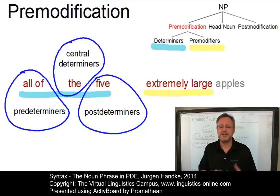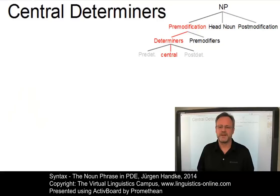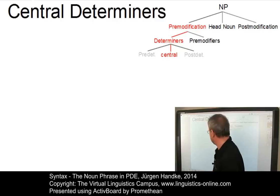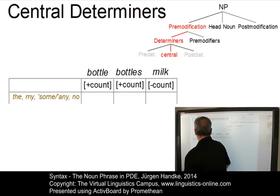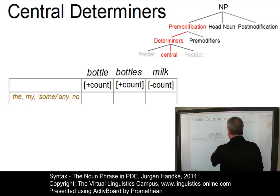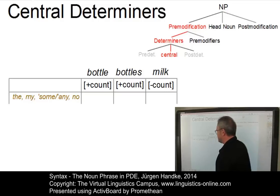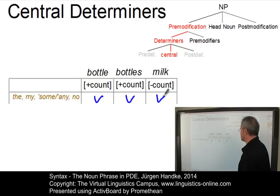Let us look at these elements in detail, starting with the central determiners. There are six classes of determiners that can be associated with the two noun classes: count noun and non-count noun. For example, the first class includes 'the', 'my', 'some', 'any' (stressed), and 'no'. Taking the count noun 'bottle' in the singular, 'bottles' in the plural, and a non-count noun such as 'milk', we can observe that they can be used in all three contexts: 'my bottle', 'my bottles', and 'my milk'.